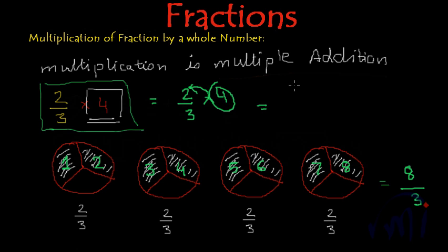See here, 4 times 2 gives 8, and keep the denominator as it is. So this was the multiplication of a fraction by a whole number, in which only the numerator of the fraction gets multiplied by the whole number, and then we get the result. And this was the pictorial explanation for the logic.